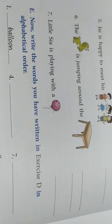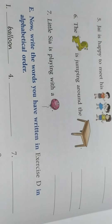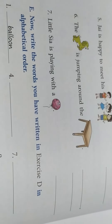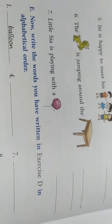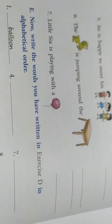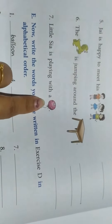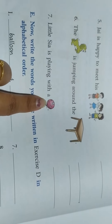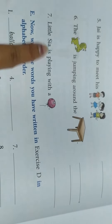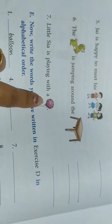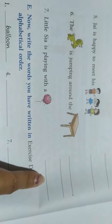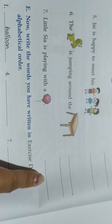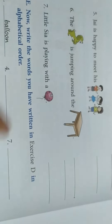And the last question. Little Sia is playing with a dash. What is this picture? This is a picture of a balloon. So little Sia is playing with a balloon. You have to write here balloon. B-A-L-L-O-N.